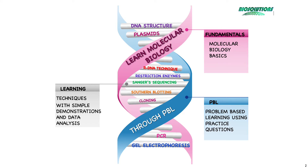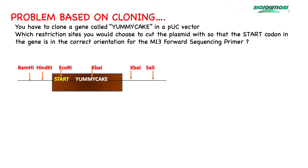But before we start, let's go through the answers of the problem I gave you in my last tutorial video. This gene of interest, Yummy Cake, has EcoR1 and XBA1 restriction sites present in its coding region or open reading frame (ORF). Hence, we cannot use these two enzymes for the cloning process.